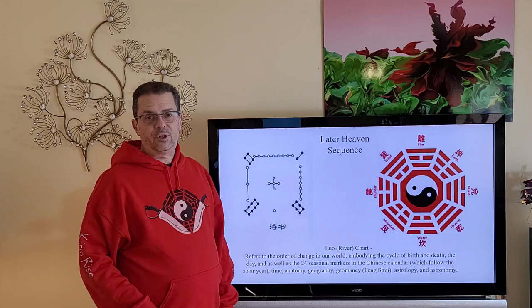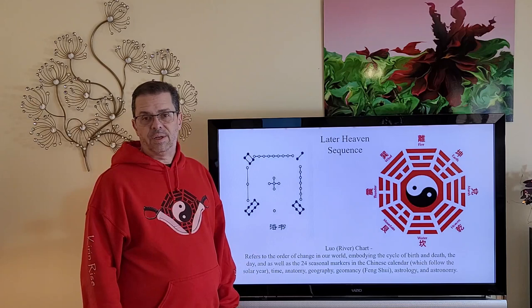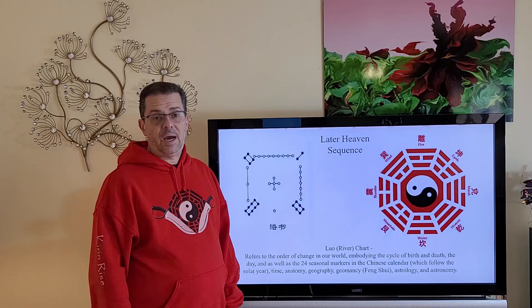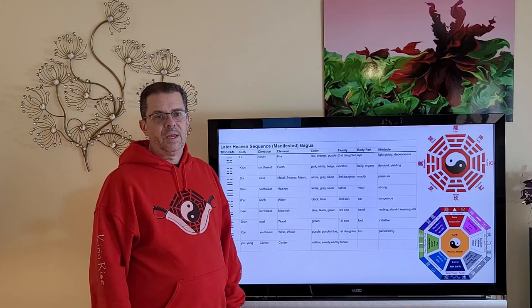It is said that the Luo River chart shows the order of changes as it happens in our world such as the cycle of birth and death, the day, the 24 seasonal markers of the Chinese calendar, time, anatomy, geomancy, astrology, and astronomy.